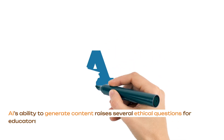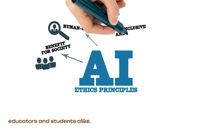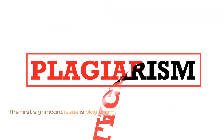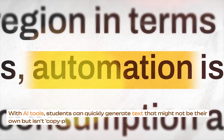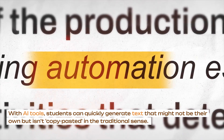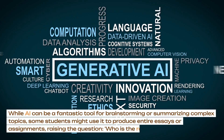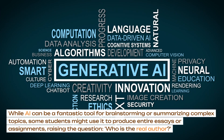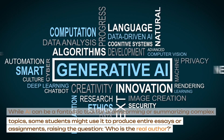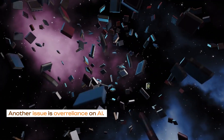AI's ability to generate content raises several ethical questions for educators and students alike. The first significant issue is plagiarism. With AI tools, students can quickly generate texts that might not be their own but isn't copy-pasted in the traditional sense. While AI can be a fantastic tool for brainstorming or summarizing complex topics, some students might use it to produce entire essays or assignments, raising the question: who is the real author?